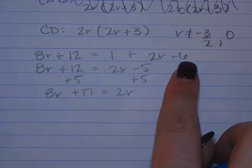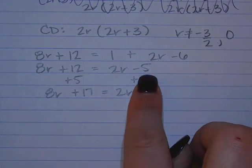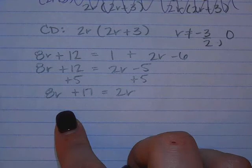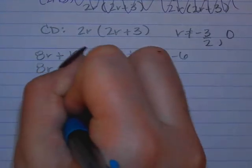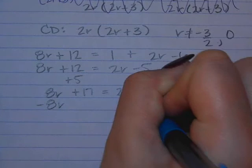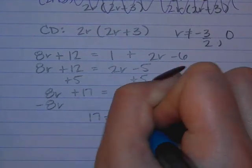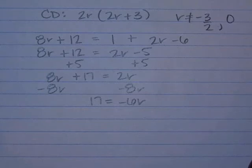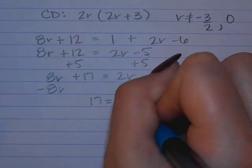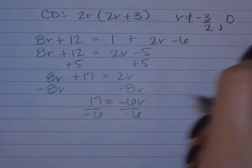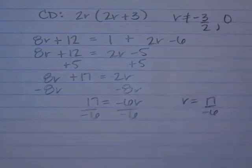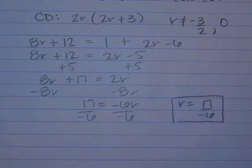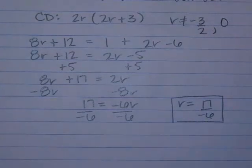So after we wrote everything in combined-like terms, Gunner suggested that we add the 5 to the other side. So now what do we have to do to get the R's to the same side? Do the back of the R. Subtract the 8R. So 17 equals negative 6R. So R equals 17 over negative 6. And we're done. That wasn't 0. That wasn't negative 3 halves. So the answer was okay.